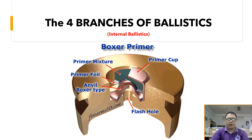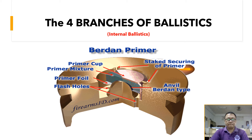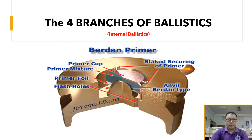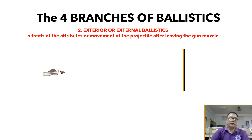Next is the Berdan primer. It also has the primer cup that holds the priming mixture, the primer stake securing the primer in the Berdan type, and the flash hole. That is the difference between the Boxer primer and the Berdan primer. Let's go now to the second branch of ballistics.